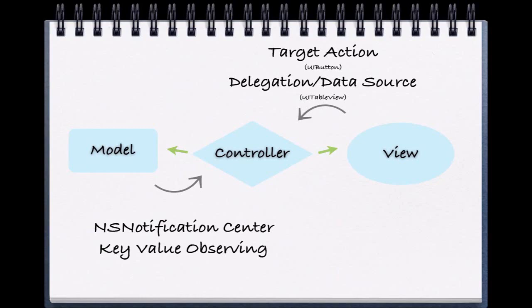Another added benefit is that the delegate method will also often provide us with additional helper information included as a parameter. For example, with the method didSelectRowAtIndexPath, we gain access to the parameter indexPath, which tells us which row in our table view the user selected. Though delegation is intimidating at first, in the long run it is meant to help. Apple's awesome classes abstract away a ton of difficult functionality and we get to concentrate on making awesome apps. You will see an example of this in our next project.